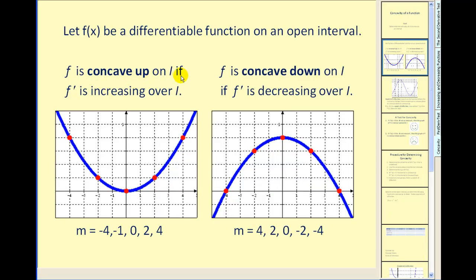F is concave up on an interval if the derivative is increasing over the interval. For example, if you drew tangent lines at these red points, remember the slope of those tangent lines would be the value of the derivative at those given x values. So the slope here would be negative four, negative two, zero, two, and four. You can see that these values are increasing from left to right, therefore the function is concave up. You can see it takes the shape of a cup opening upward.